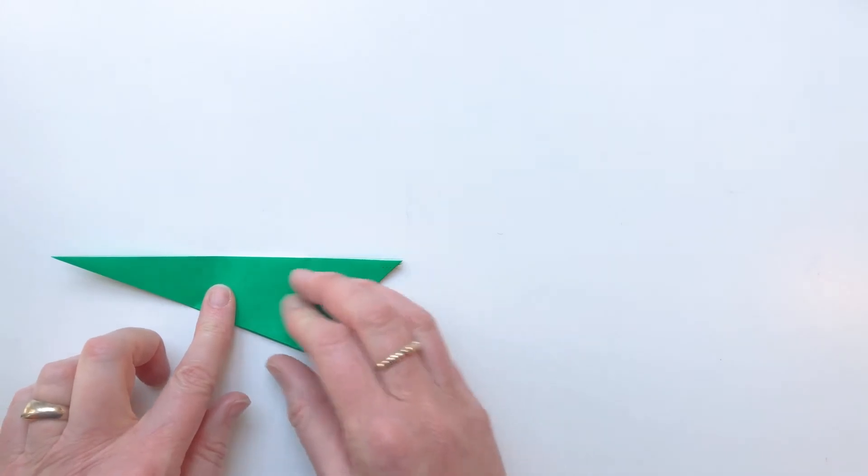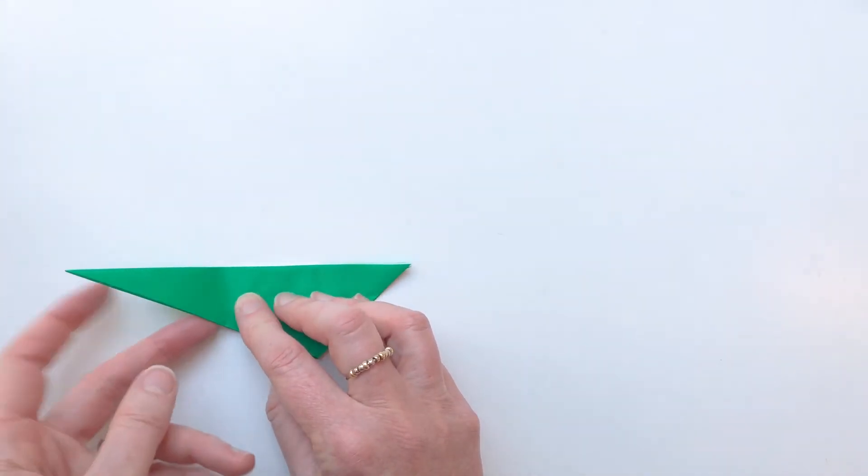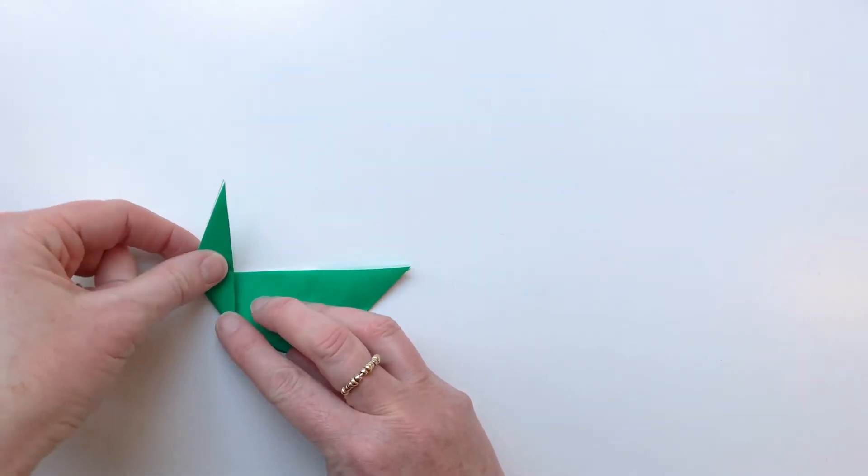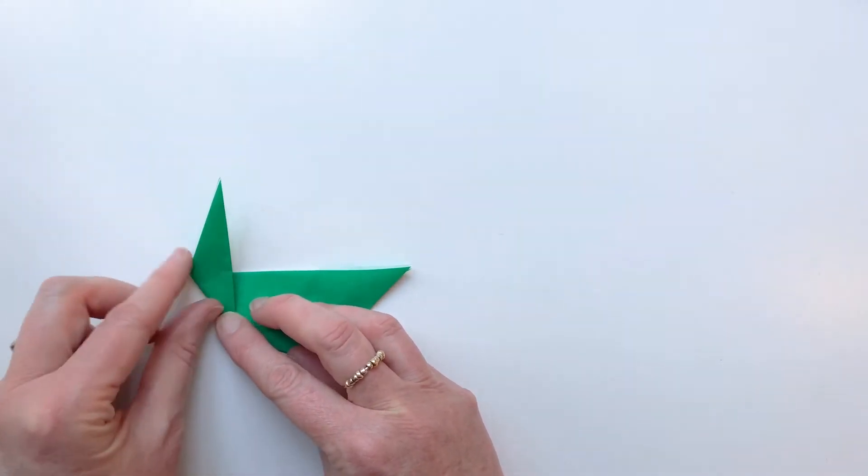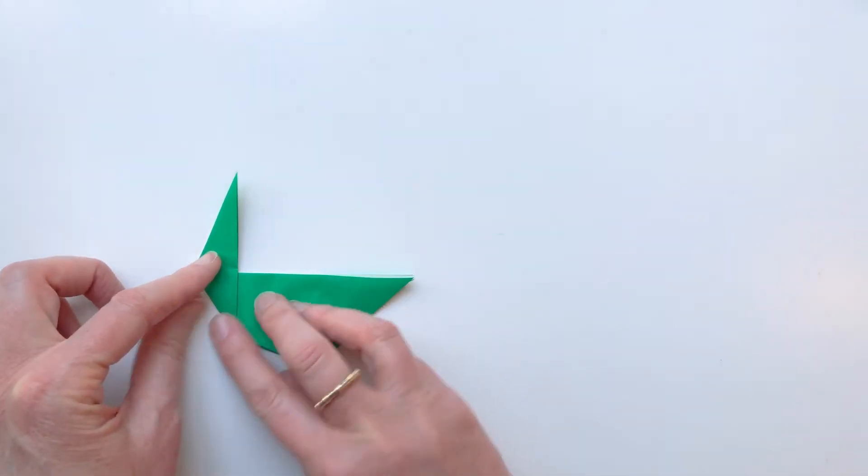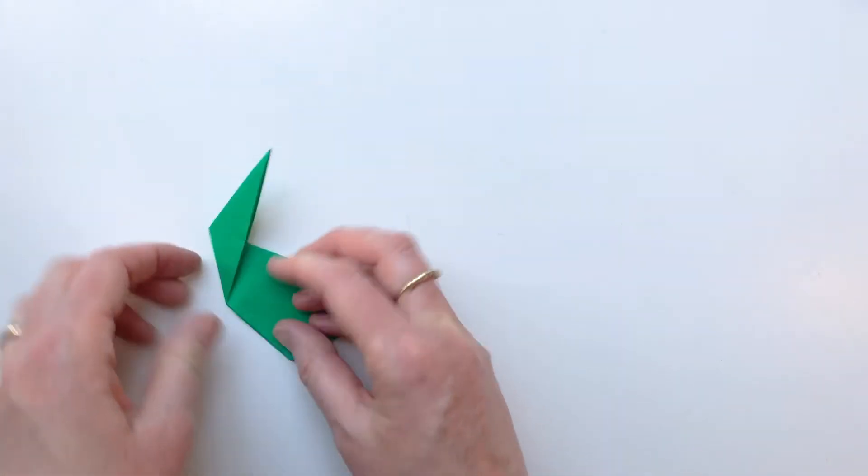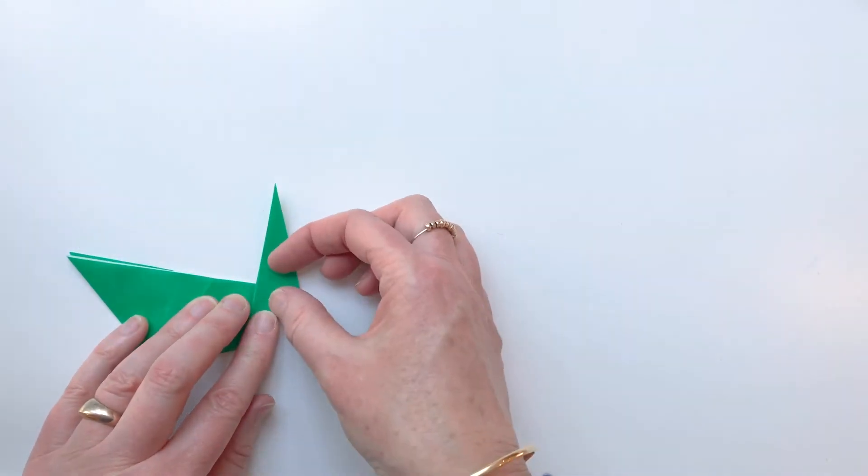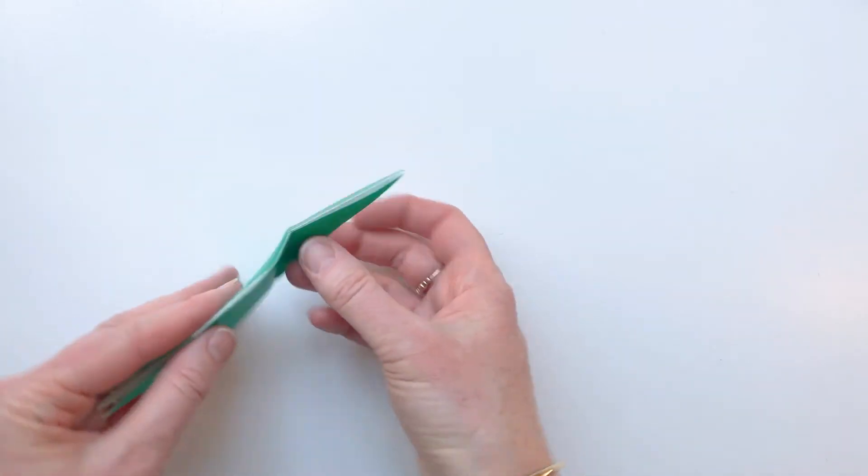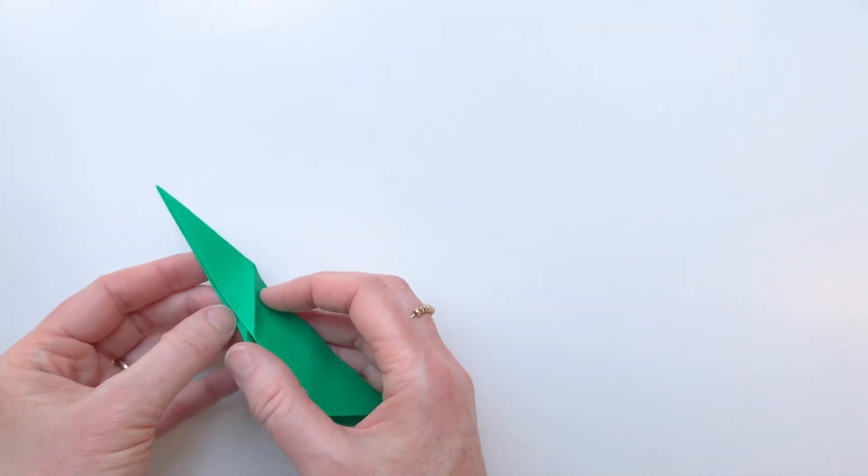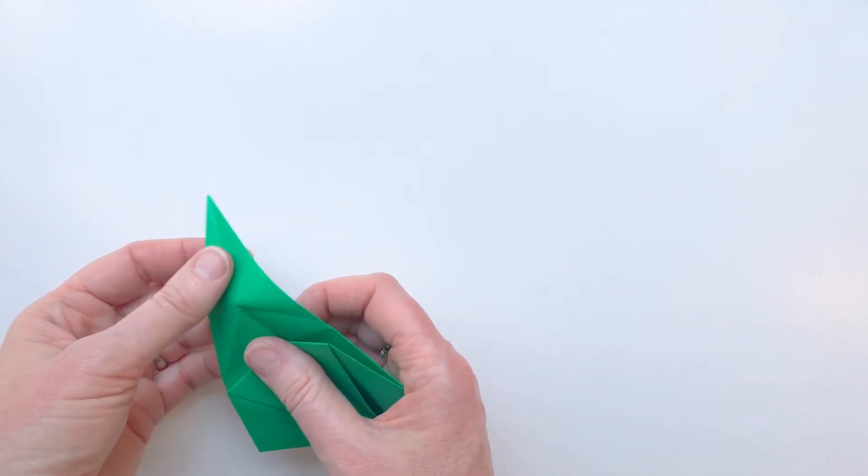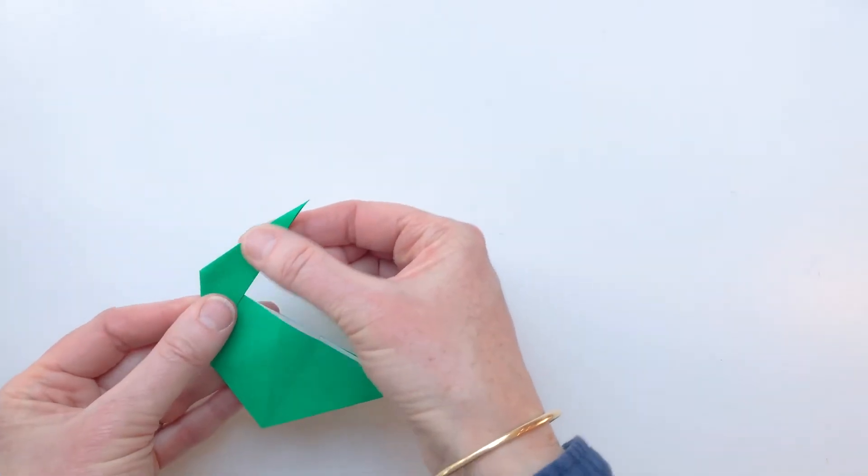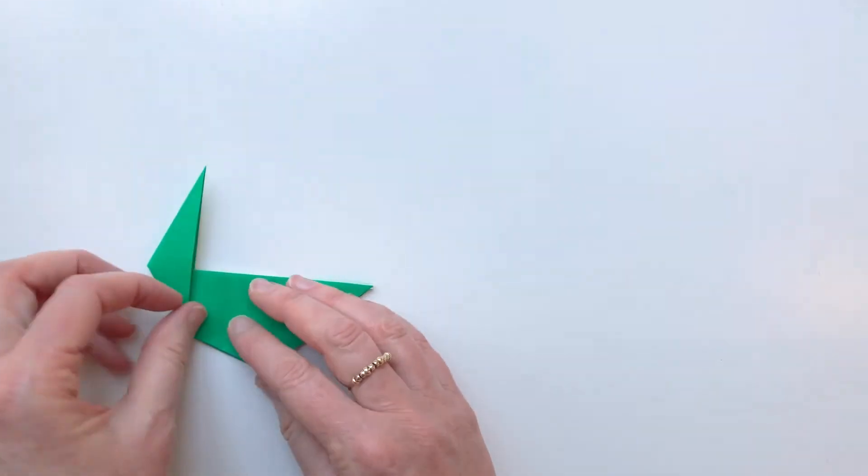So now we're going to make the bird's neck. So to do this, you're going to fold this tip up so that you've got a right angle here. And you make a crease there. And then if you want to, you can fold it the other way as well. Just so you've got a really good crease. And then what we do is we open up this fold here and gently push the tip back. Like that.